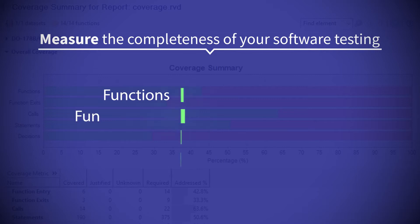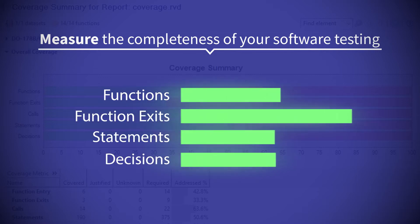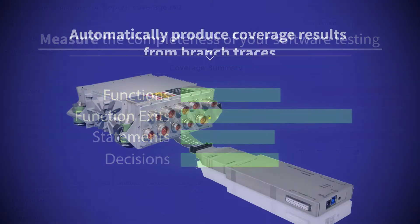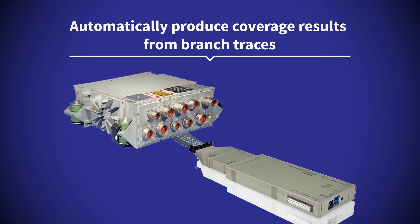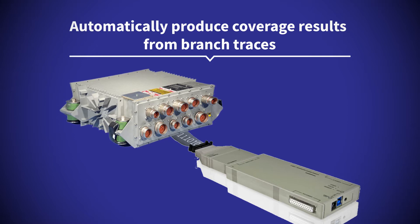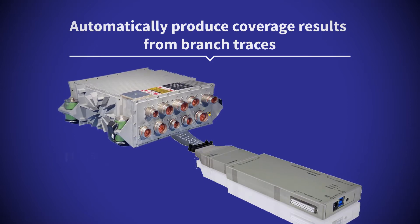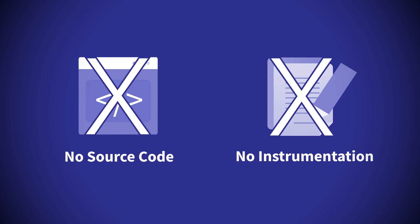RappiCover Zero helps you measure the completeness of your software testing. Using a branch trace collected during program execution on your target or in a simulator, it calculates coverage from your software execution with no need for source code or instrumentation.